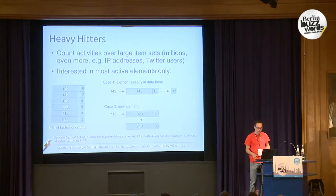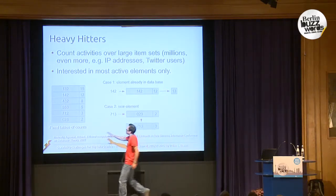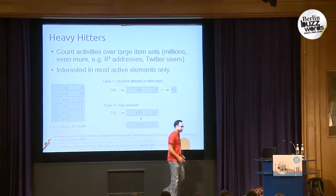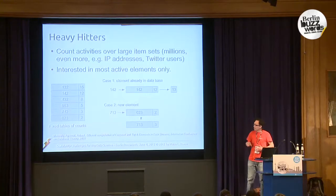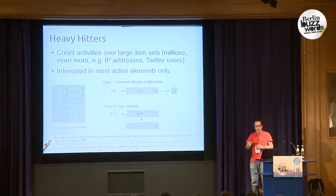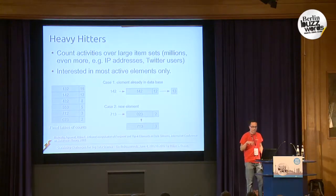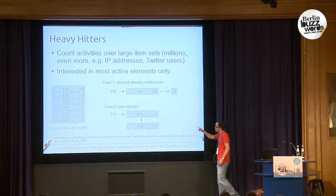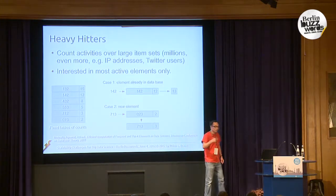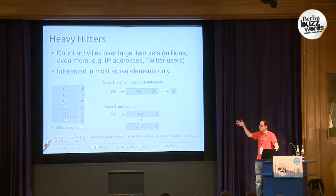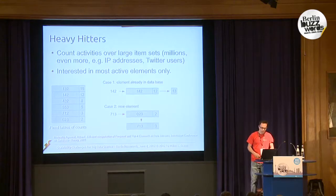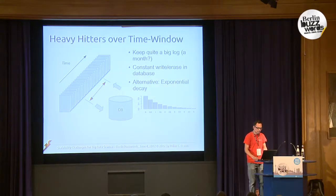You have a fixed table of counts which you can hold in memory. When a new event comes in, there are two cases: either the element is already in the table — you just increment its counter — or it's not, in which case you remove the element with the least activity but use its count to go up. You can actually prove this is a good estimate for the true count. This way you can process thousands or more events per second even on your laptop.